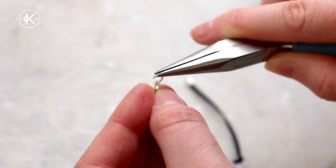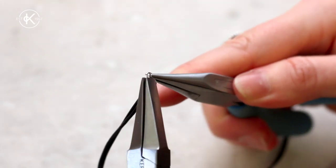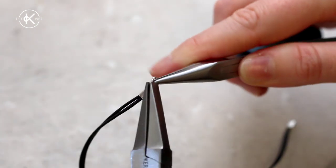So grab your snipe nose and flat nose pliers to twist a jump ring open, then simply attach the hole in the cord end and twist closed.